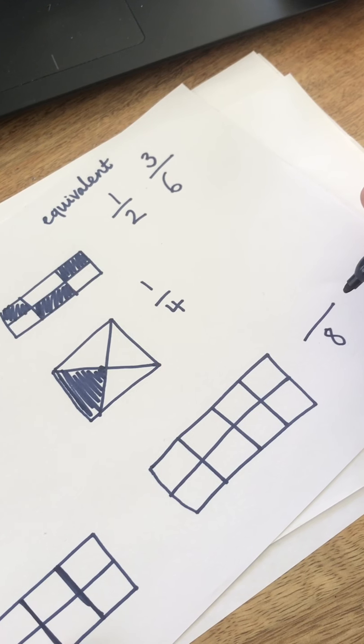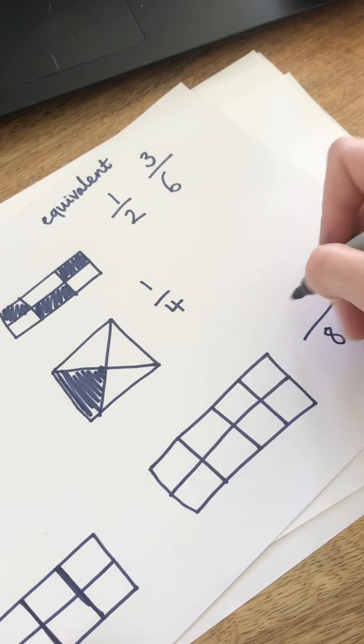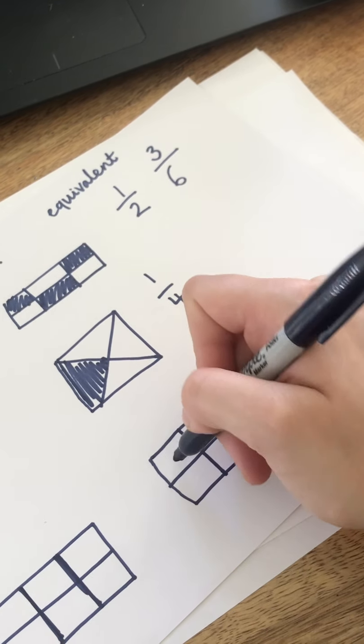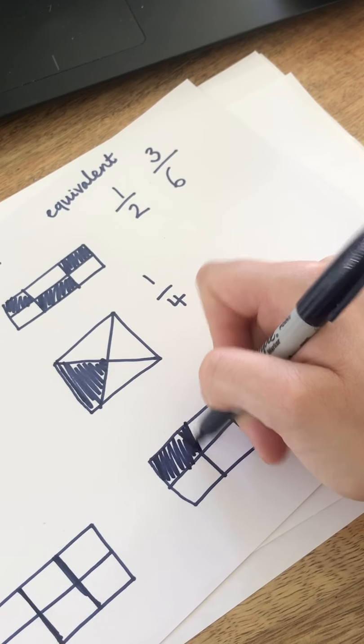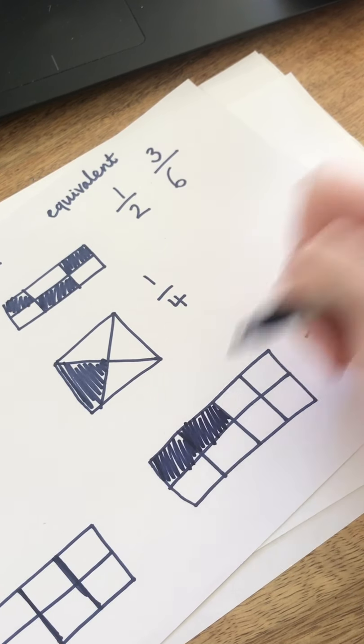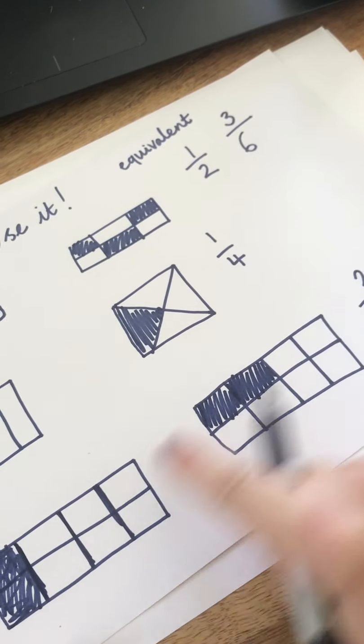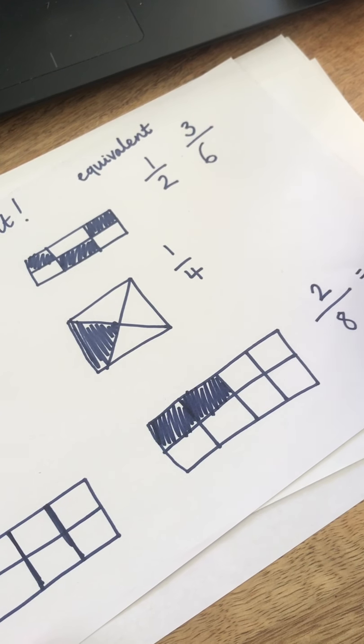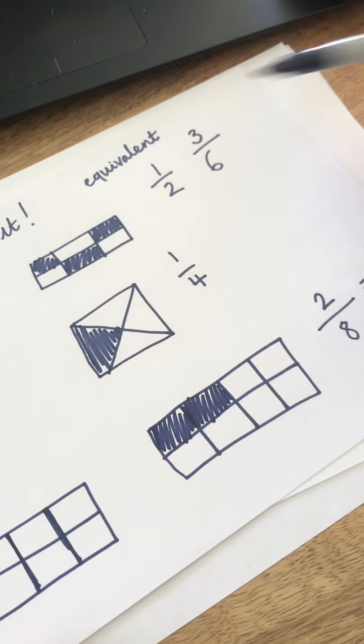And to find a quarter of eight, you just need to half the number and half it again. Half of eight is four. Half of four is two. Two-eighths. So if I colour in two squares, it doesn't matter which two. I've coloured in two-eighths, but that is exactly the same, if you look here, it's exactly the same as colouring in one quarter. Because they're the same as each other, they are equivalent.